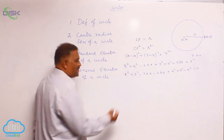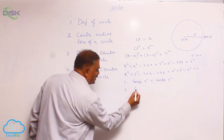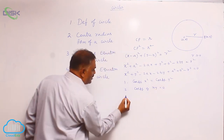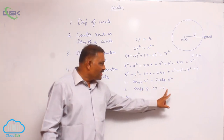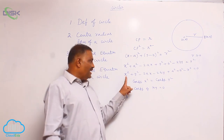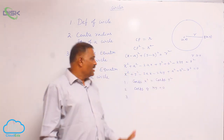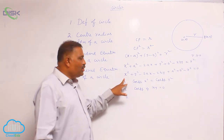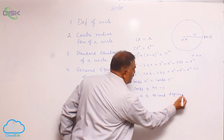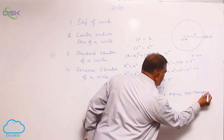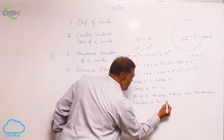We observe three points here. Number one: the coefficient of x² is equal to the coefficient of y². Number two: the coefficient of xy is equal to 0. Number three: we observe that it is of second degree in x and y, and first degree terms are also present — that means it is a non-homogeneous equation of maximum second degree in two variables x and y.